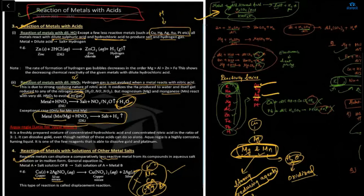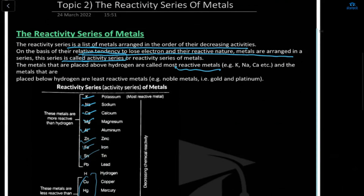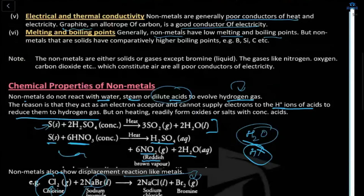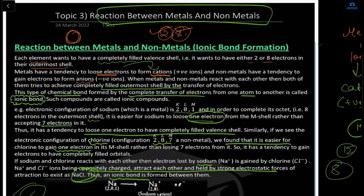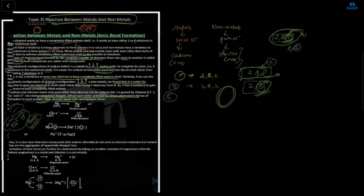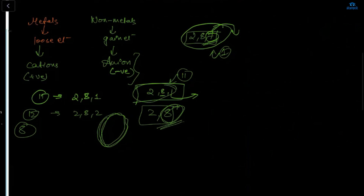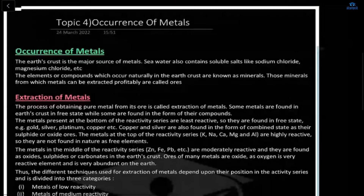Today we learned: reaction of metals with dilute H₂SO₄ and HCl; the reactivity series showing more and less reactive metals; chemical properties of non-metals; reaction between metals and non-metals forming ionic bonds; and properties of ionic compounds. In the next class we will start with the surface properties of metals.